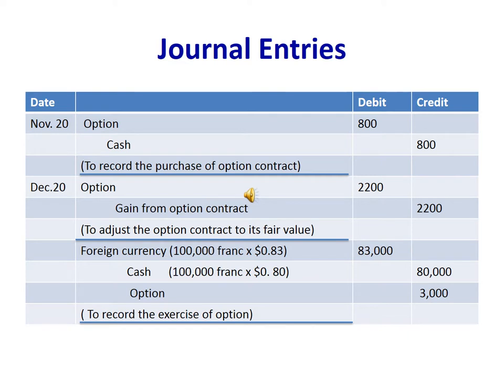On November 20, we record the purchase of the option contract with the premium of $800: debit Option $800, credit Cash $800. On December 20, we adjust the option contract to its fair value — the option increased by $2,200: debit Option $2,200, credit Gain from Option Contract $2,200.